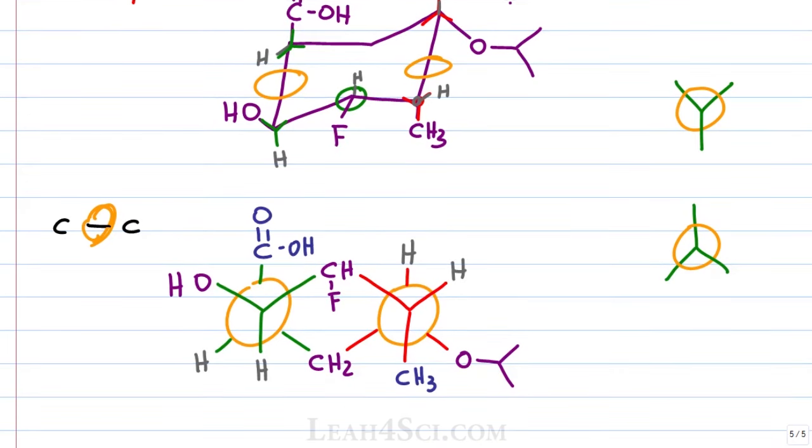At this point, make sure that every carbon has the correct number of attached groups. Start with a Newman and make sure your Y or upside down Y does have three things attached where the middle is a carbon that connects the right and left side of the ring. We have 1, 2, 3, 1, 2, 3, 1, 2, 3 and 1, 2, 3.